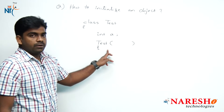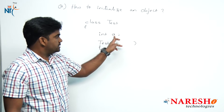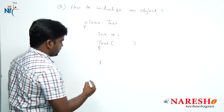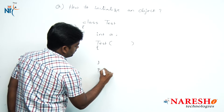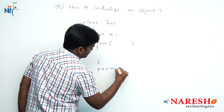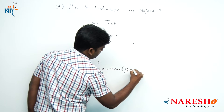We are writing the constructor to provide initialization to this value, and next we are writing the main method: public static void main(String[] args).